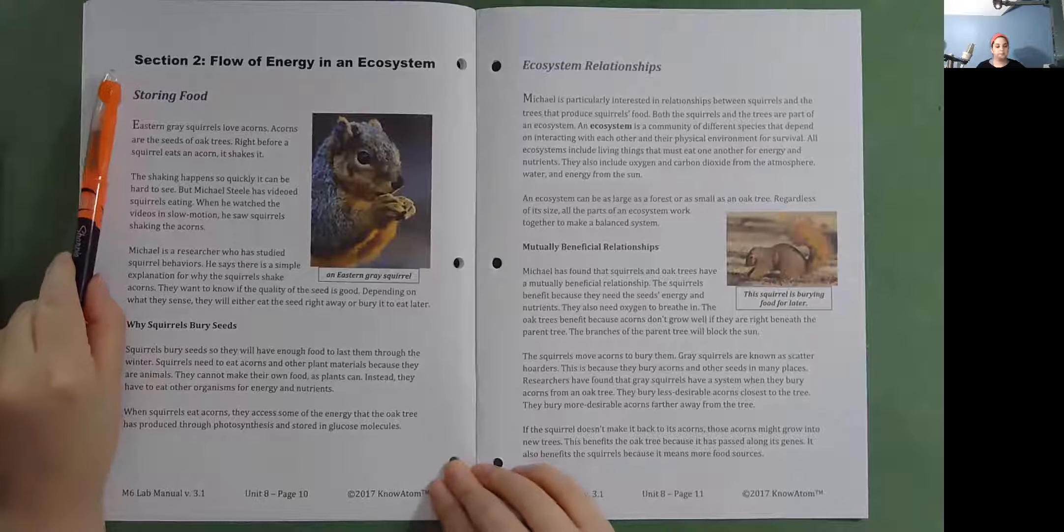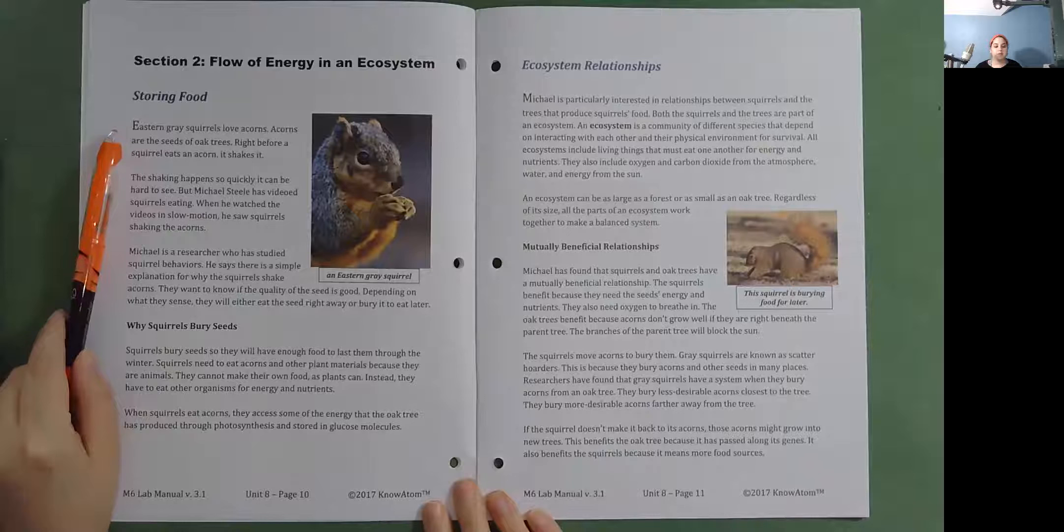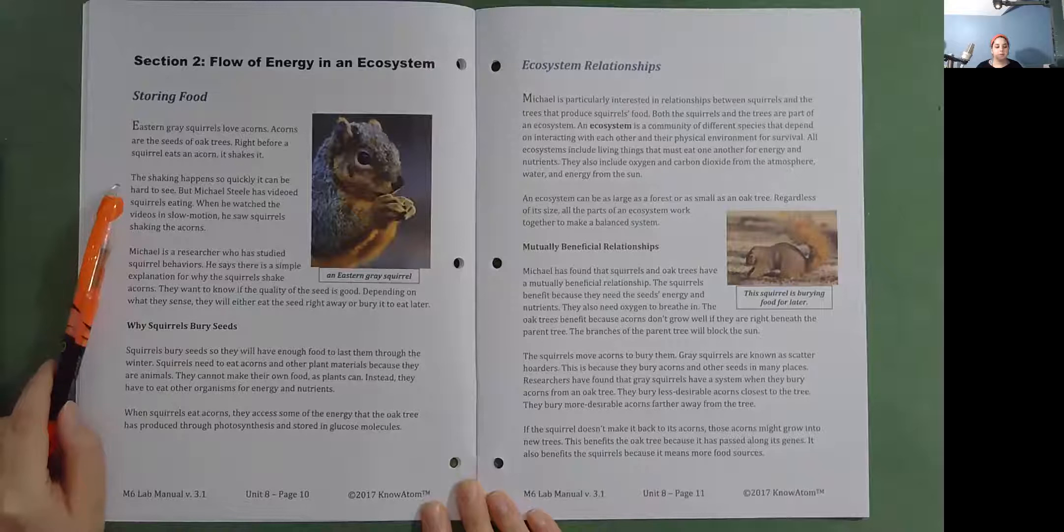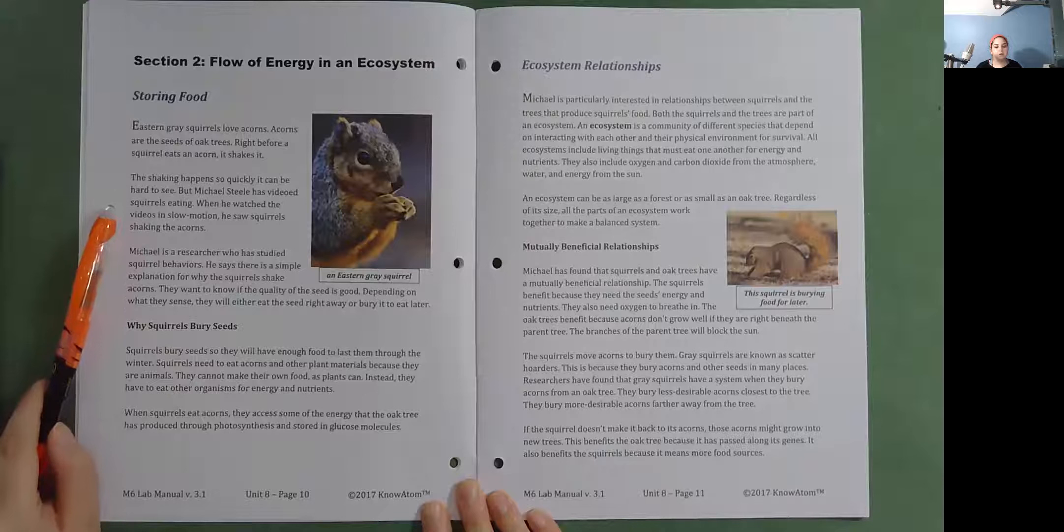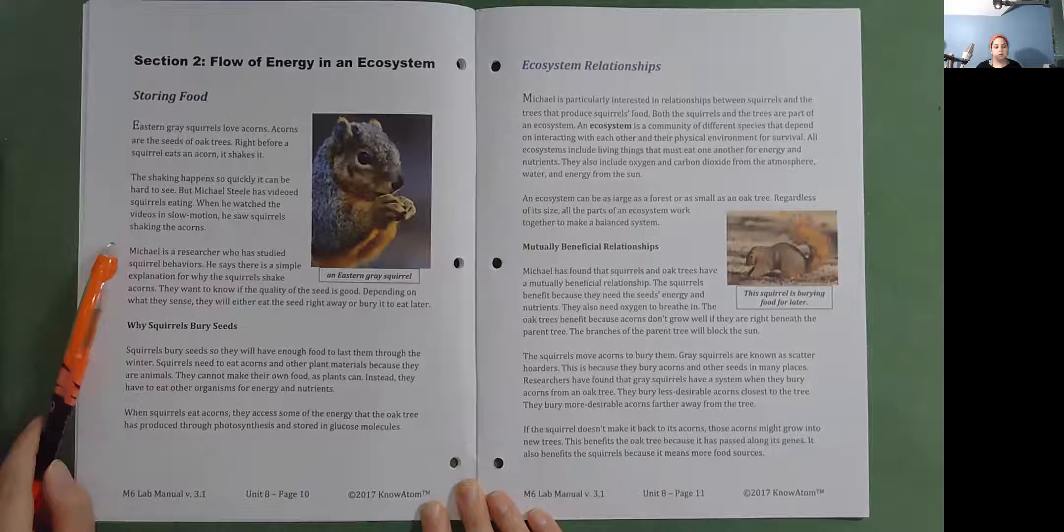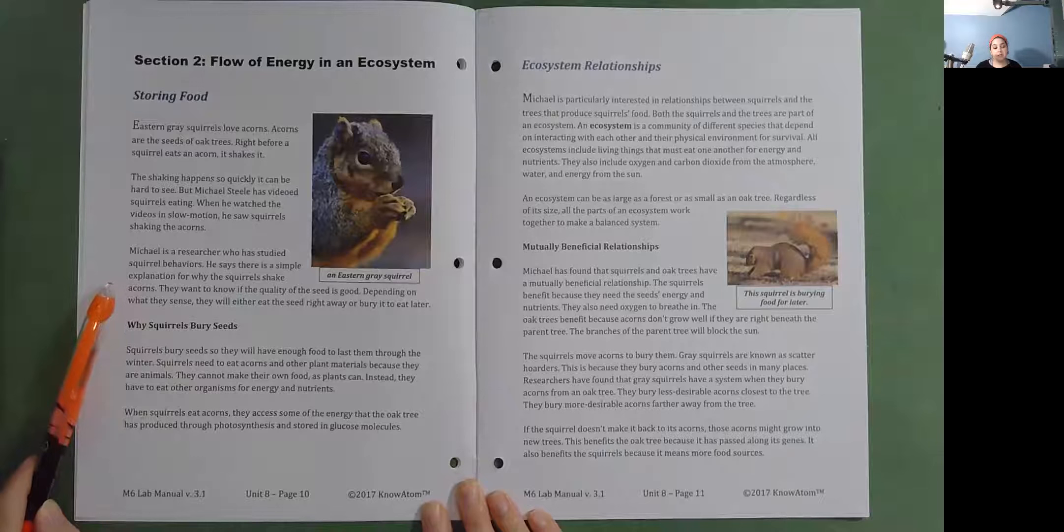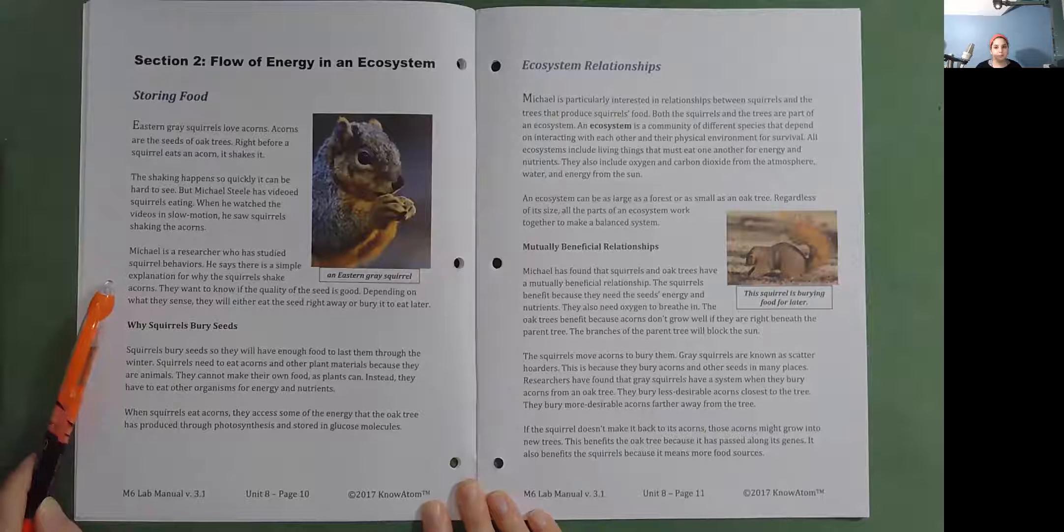Section 2: Flow of Energy in an Ecosystem. Storing Food. Eastern gray squirrels love acorns. Acorns are the seeds of oak trees. Right before a squirrel eats an acorn, it shakes it. The shaking happens so quickly it can be hard to see. But Michael Steele has videoed squirrels eating. When he watched the videos in slow motion, he saw squirrels shaking the acorns. Michael is a researcher who has studied squirrel behaviors. He says there is a simple explanation for why the squirrels shake acorns. They want to know if the quality of the seed is good. Depending on what they sense, they will either eat the seed right away or bury it to eat later.